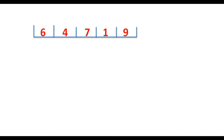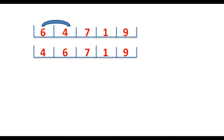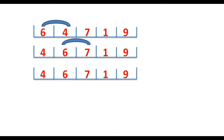We are going to have the first round of bubble sort. In the first round, adjacent elements are going to be compared. First, 6 and 4 will be compared. Since we want our output in ascending order and 6 is greater than 4, these elements will be swapped. So the output after the first pass is 4, 6, 7, 1, 9. Next, 6 and 7 will be compared — 7 is already greater than 6, so it is at the right position and no swapping is going to happen.